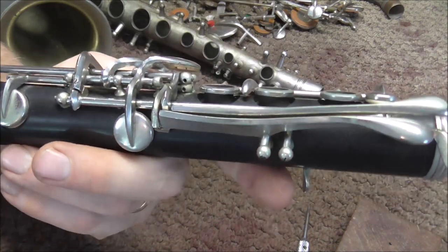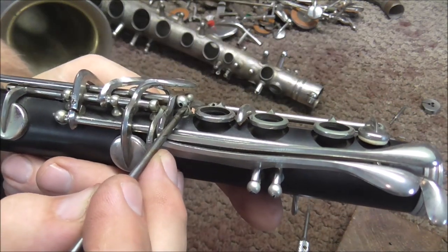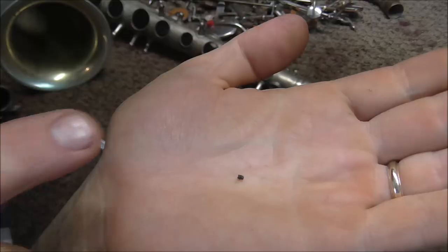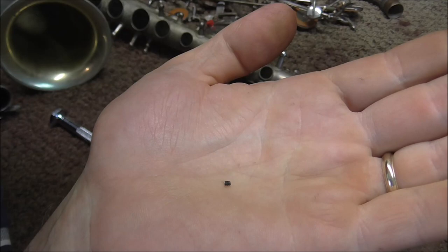Kahn clarinets also have this locking system. You can see that there's a hole on the side of the post, and that means that it uses the same locking system. Because these screws are so small, they often get lost.